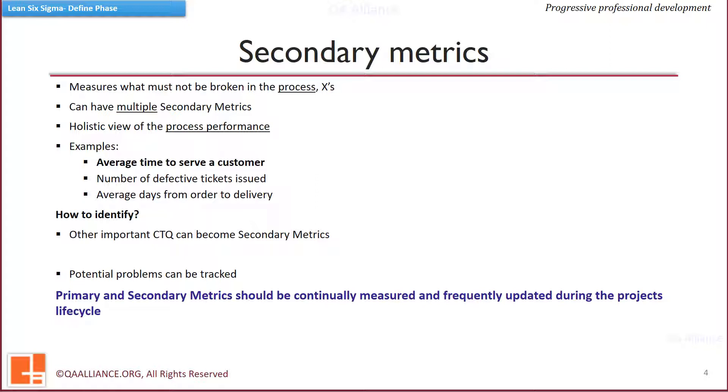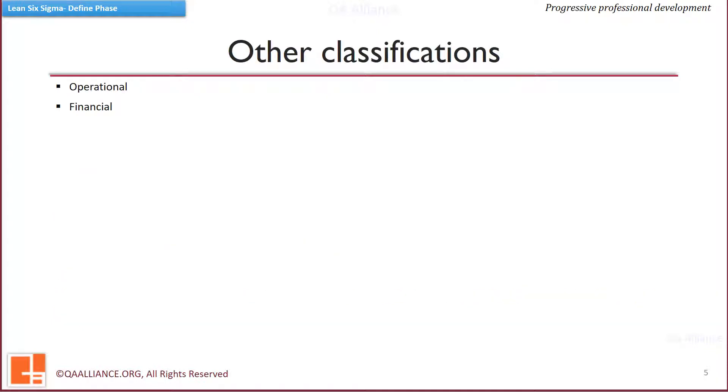Primary and secondary metrics should be continually measured and frequently updated during the project's life cycle. Metrics can be classified in many ways, depending on the context in which they are used. Another classification of metrics is operational and financial metrics.